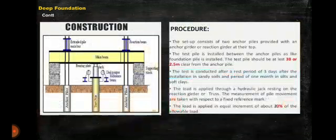Then procedure: First, setup consists of 2 anchor piles provided with an anchor girder or reaction girder at their top. Next, the test pile is installed between the anchor pile as like foundation pile is installed and test pile should be at least 3B or 2.5 meter clear from the anchor pile. Third, the test is conducted after rest period of 3 days after the installation of sandy soil and the period of 1 month in silt and soft clay. Number 4, loads are applied through the hydraulic jack resting on the reaction girder or truss. And last one, the load is applied in equal increment of about 20 percent of the allowable load.